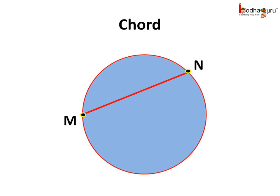We already know what is a chord. A line segment with its end points on the circle is called the chord of the circle. So here the line segment MN is a chord.